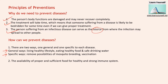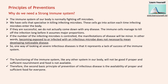The availability of proper and sufficient food for a healthy and strong immune system is very important when talking about infectious disease or hereditary disease. Healthy and disciplined lifestyle will give you a strong immune system, and this strong immune system will keep you healthy from any minor diseases. These are some of the preventive measures by which we can prevent diseases.